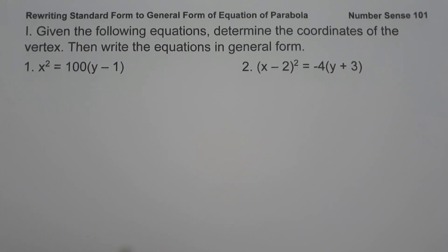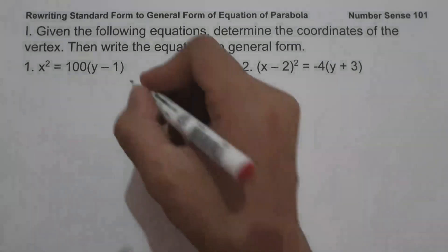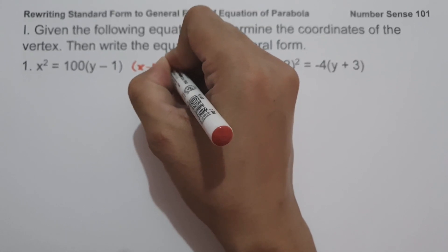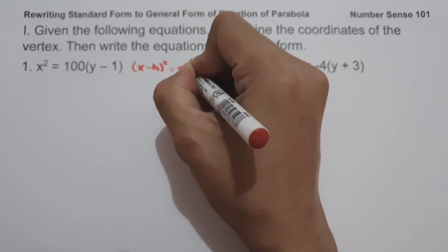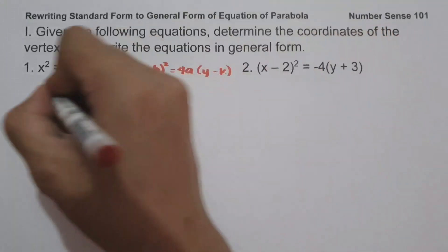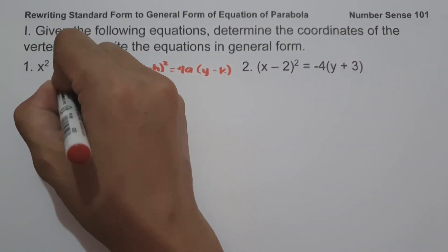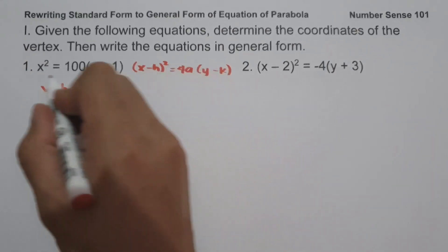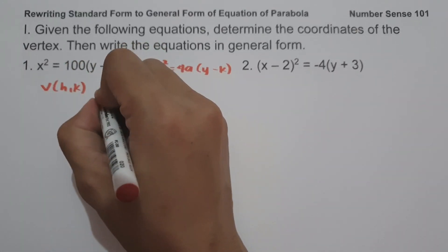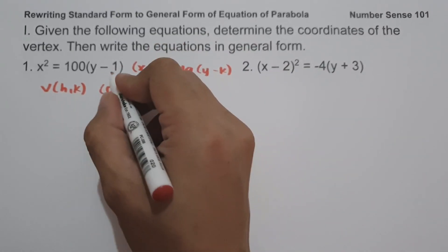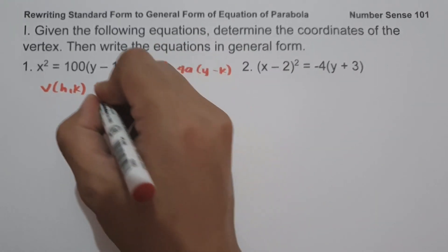On example number 1, we have x squared equals 100 times quantity y minus 1. Since the given equation is written in the form of (x minus h)² = 4a times quantity (y minus k), to determine the vertex, that is h and k: since we don't have h in our given, h is 0, and k is positive 1 — we take the opposite sign of negative 1.